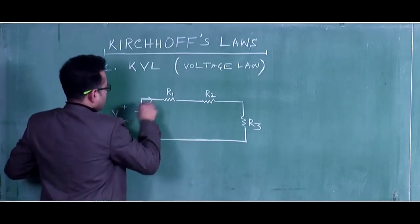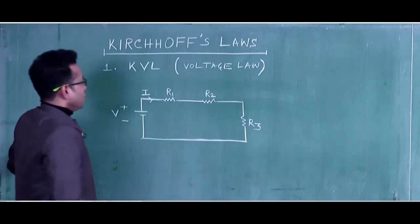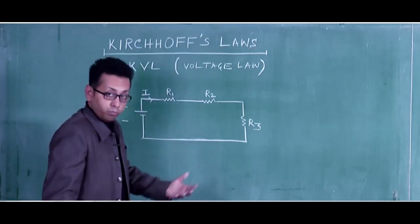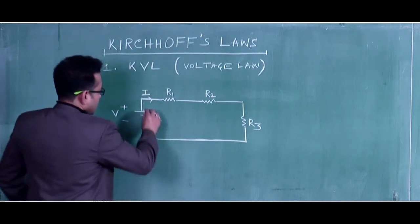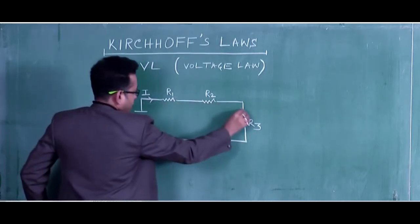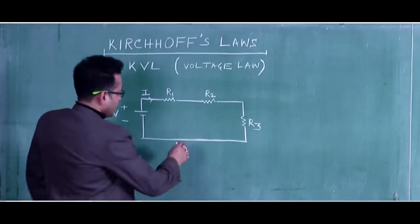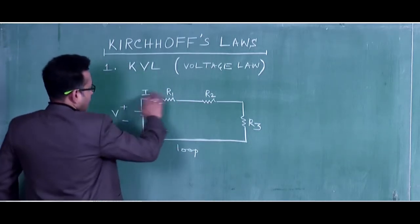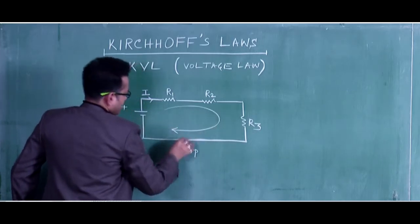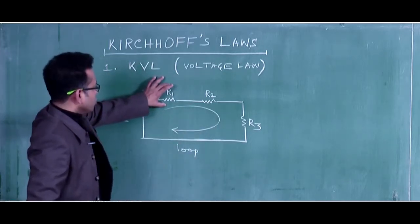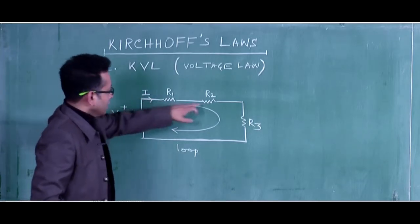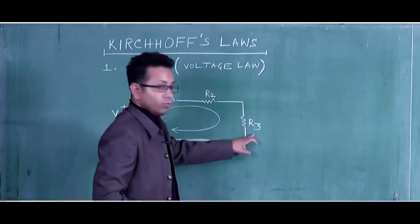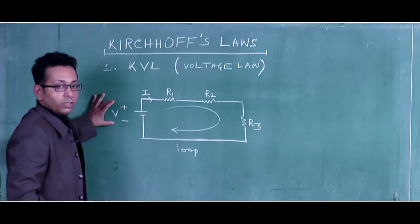Now, current is also DC current, which is I. So according to Kirchhoff's voltage law, the sum of all the voltages in a particular loop equals zero. This closed path of a circuit can be treated as a loop. Current I is flowing in this direction, so there will be a voltage drop which is I×R1, another voltage drop which is I×R2, another voltage drop which is I×R3, and the given source voltage is V.